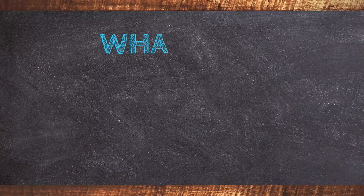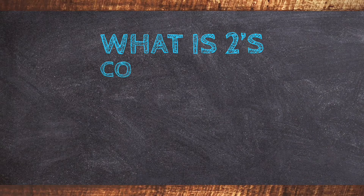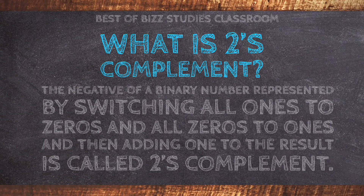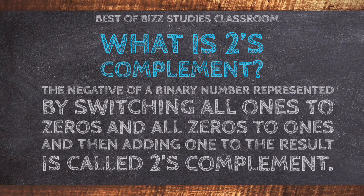Now, what is 2's complement? The negative of a binary number represented by switching all 1's to 0's and all 0's to 1's, and then adding 1 to the result, is called 2's complement. Problem number 2.